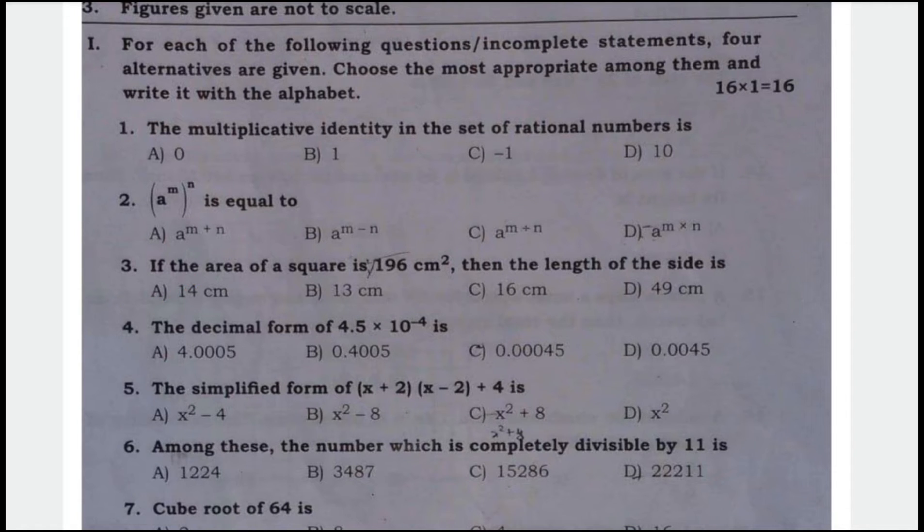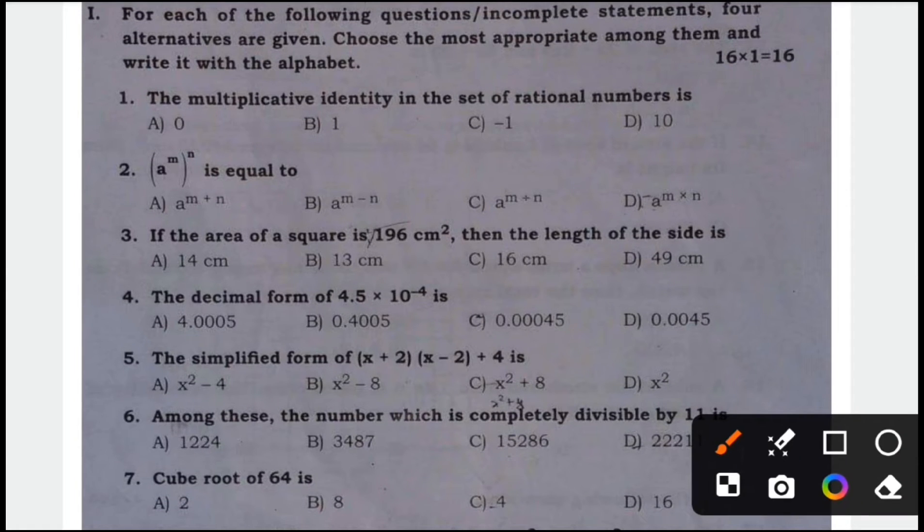Next, the decimal form of 4.5 into 10 to the power of minus 4 is option C, 0.00045 is the correct answer.